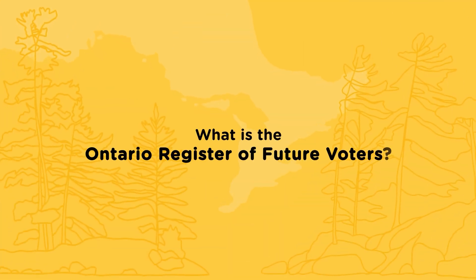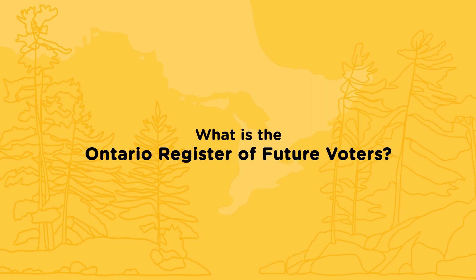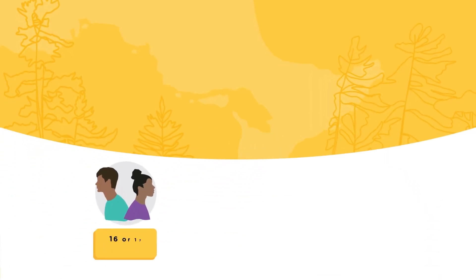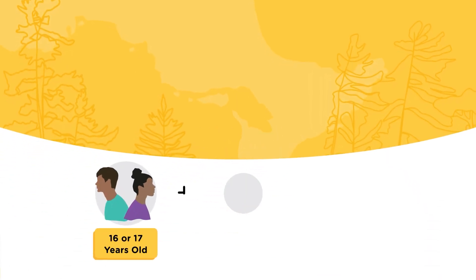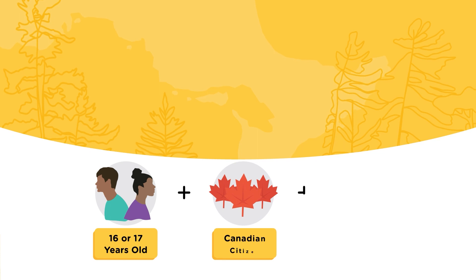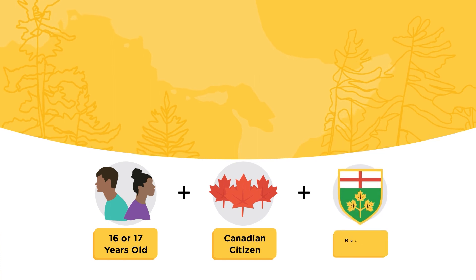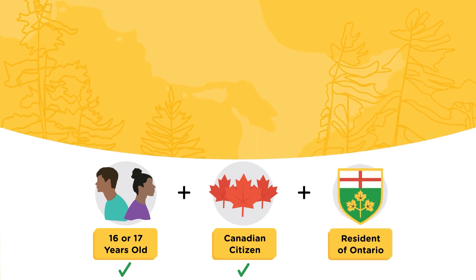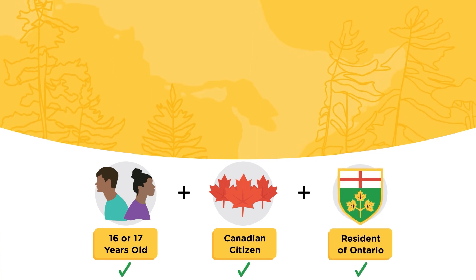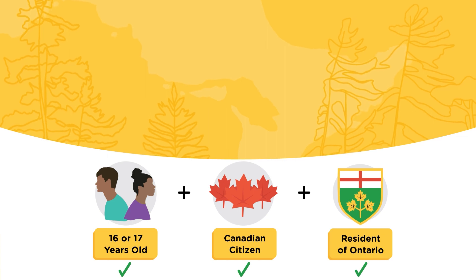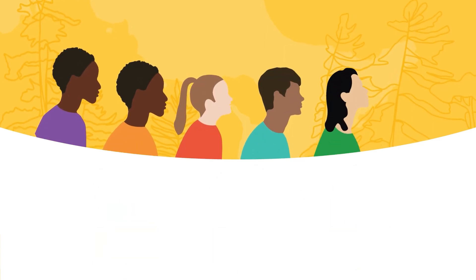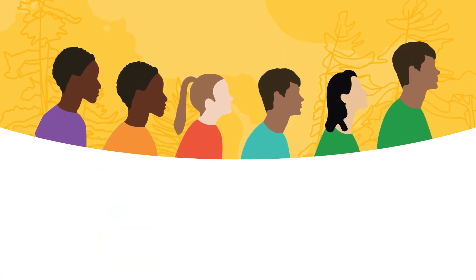What is the Ontario Register of Future Voters? Are you 16 or 17 years old, a Canadian citizen, and a resident of Ontario? If you answered yes to all three, you are eligible for the Ontario Register of Future Voters.